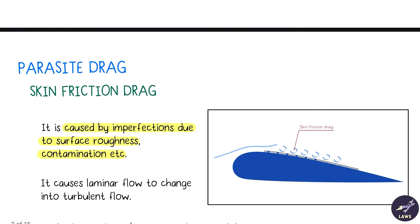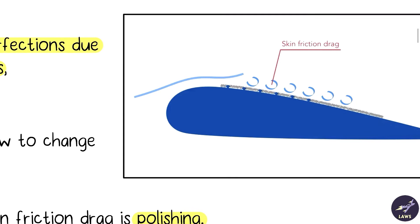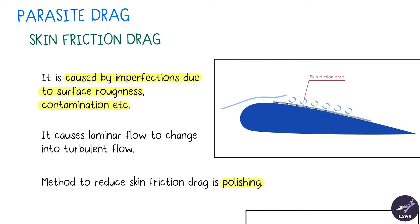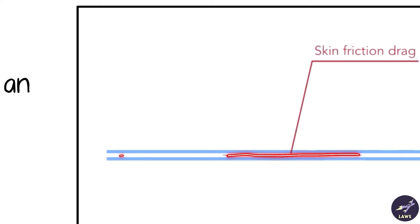First is skin friction drag, which is part of parasite drag. It is caused due to surface roughness and contamination — for example, a small thin layer of ice or any other contamination. It causes laminar flow to change into turbulent flow. The method to reduce skin friction drag is polishing. A flat plate parallel to the airflow is a classic example, as this shape gives the highest amount of skin friction drag.